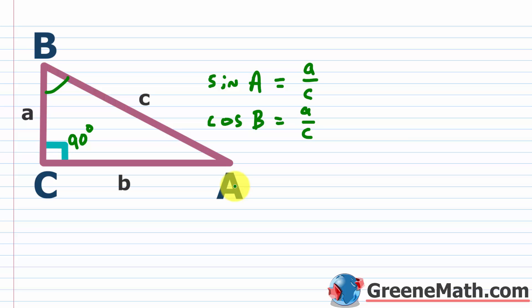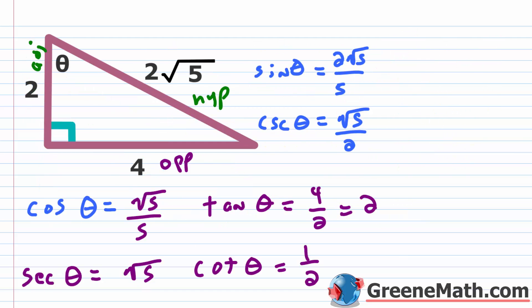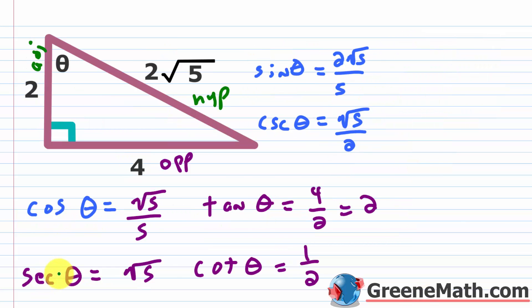Because angles A and B are complementary and sine of A equals cosine of B, we say sine and cosine are co-functions. Similarly, tangent and cotangent are co-functions, and secant and cosecant are co-functions. You can verify: the tangent and cotangent values swap between the two examples, and the cosecant and secant values match across examples.